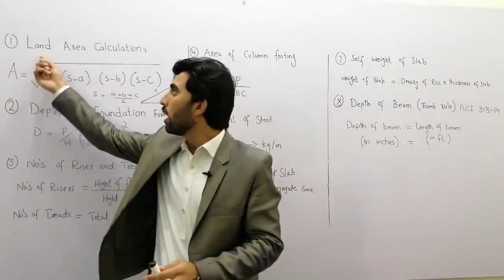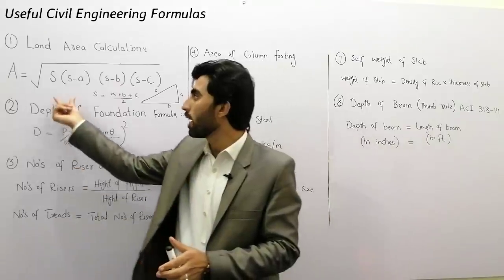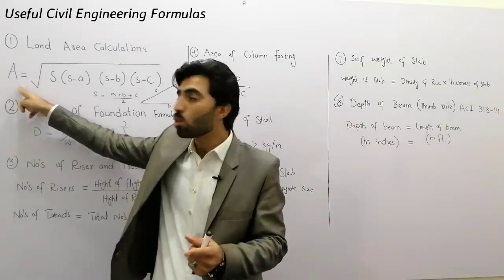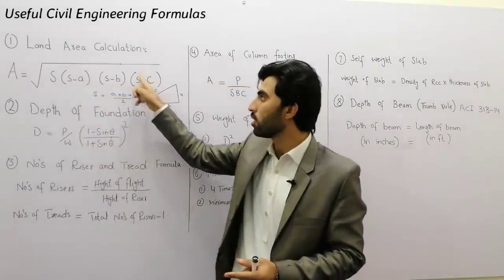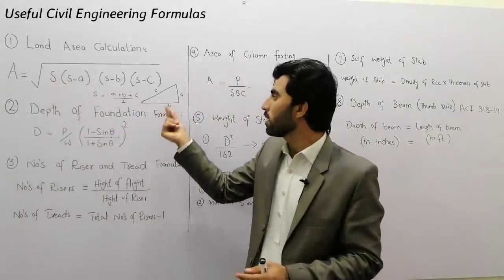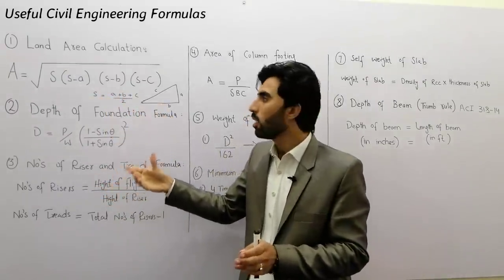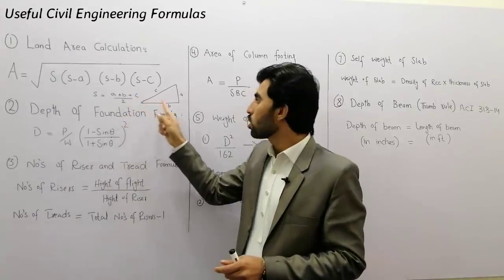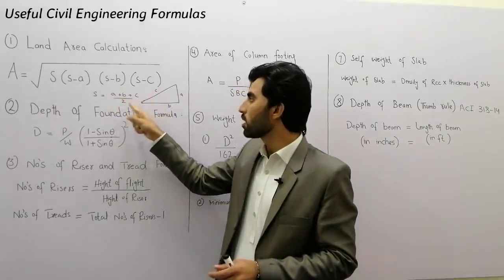The first formula is about land area calculation. If you want to find land area you can use the given formula. A for area: A is equal to the square root of S into (S minus A) into (S minus B) into (S minus C). We can use this formula for triangulation survey. S is equal to A plus B plus C divided by 2. For a triangle we have three sides A, B, and C.